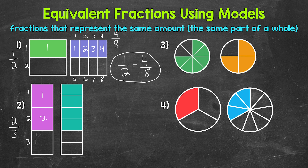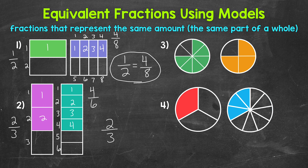Now, as far as the rectangle on the right, that's been divided into one, two, three, four, five, six equal parts. So six is our denominator. And one, two, three, four parts have been shaded in. So four is our numerator. So four sixths of that rectangle is shaded in. That rectangle is representing four sixths. That means that two thirds and four sixths are equivalent fractions.